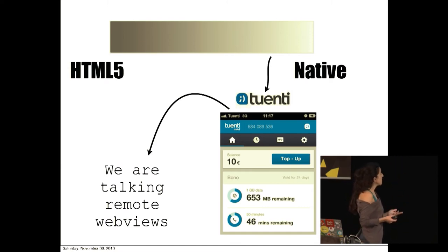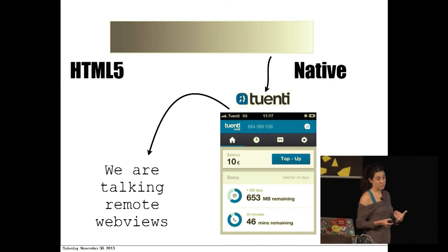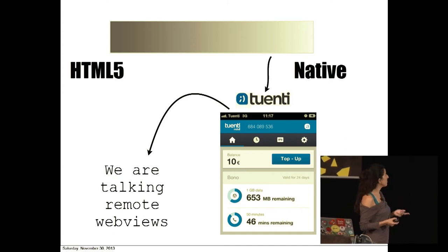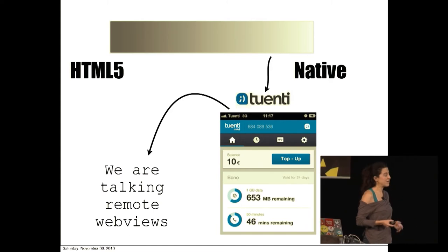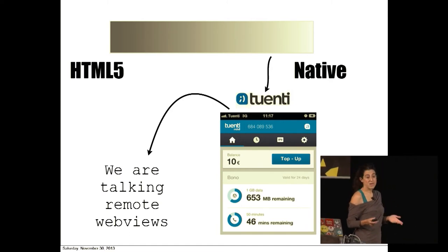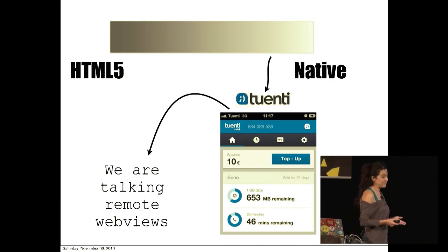The important thing is that we offer web functionality to our paying customers. Because 20 is not only a social network, but it's also a telco operator. We have 200,000 people that pay us to be their telco, and that functionality is all web-based in the mobile app.